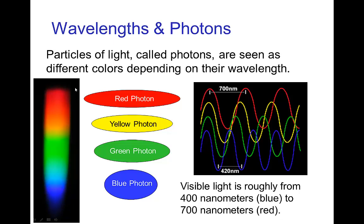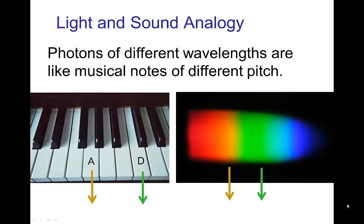For even longer photons, we're in the infrared, and our eyes are not sensitive to those wavelengths. On the other side, the even shorter photons are in the ultraviolet, and we're not sensitive to those either. You can see that this association of wavelength with different colors of photons is somewhat analogous to, in sound, different notes — we hear notes of different frequencies and we see photons of different wavelengths.